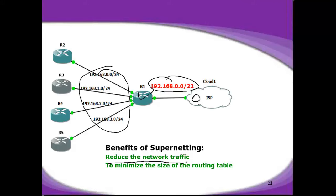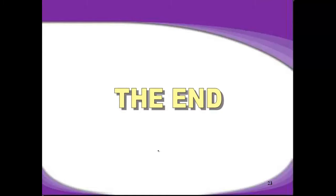In conclusion, supernetting is the inverse of subnetting — it takes multiple networks and summarizes them into one. The method is: first write all numbers in binary, then find the matching bits, then write the new network ID, then write the new subnet mask. That new mask and new ID is advertised to the outside routers as the summarized supernet entry. I hope this video has been informative for you. Thank you for watching.